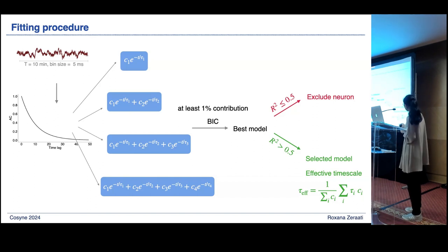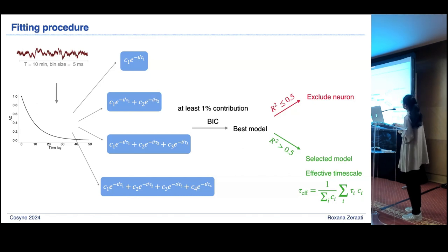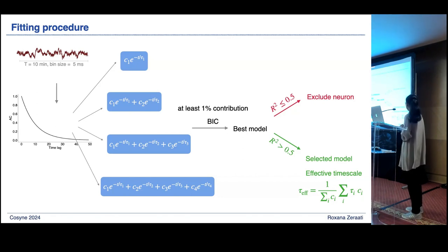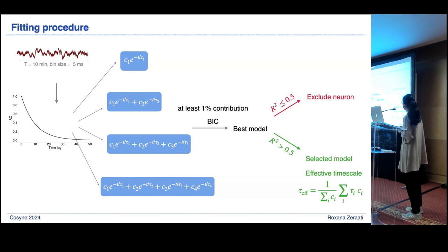We also use the coefficient of determination to assess quality of fit, since there is no guarantee the best model is within our four-model set. We only include neurons where the selected model explains more than 50% of the variance (R² > 0.5); otherwise the neuron is excluded. For included neurons, we define an effective timescale — a weighted sum of all fitted timescales — to have one measure per neuron for comparisons.